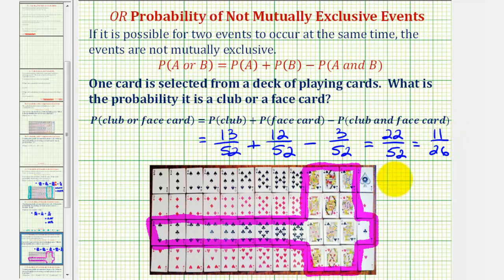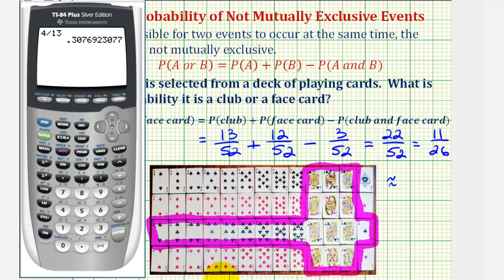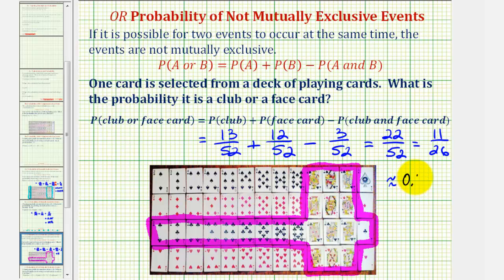Let's go ahead and give this as a decimal as well. 11 divided by 26 would give us the decimal value, so it's approximately 0.4231. As a percentage, we would multiply by 100 and add a percent symbol, or move the decimal point to the right two places. That would be approximately 42.31%.